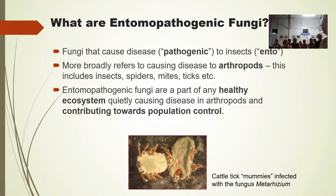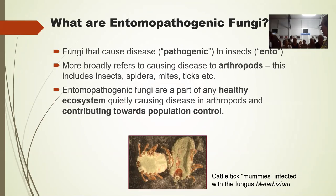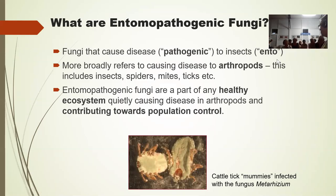Entomopathogenic fungi — literally the fungi that cause disease. Pathogenic just means disease-causing, and ento means insects. But more broadly, we talk about the fungi that cause diseases to arthropods — insects, spiders, mites, ticks, et cetera. Whenever I say insects in this presentation, I'm more broadly meaning arthropods. The entomopathogenic fungi are actually part of any healthy ecosystem, quietly causing diseases in arthropods and contributing towards population control of those insects.